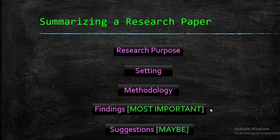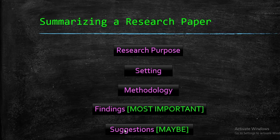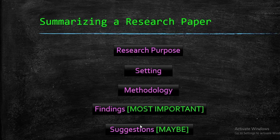You do not actually have to cover all five elements in a research paper summary. Sometimes you can just cite the findings and that's it. You can also consider the suggestions or recommendations made by the authors — if they suggested further research in an area that you are now filling, then it's also very relevant. But most importantly, you have to cite the findings.